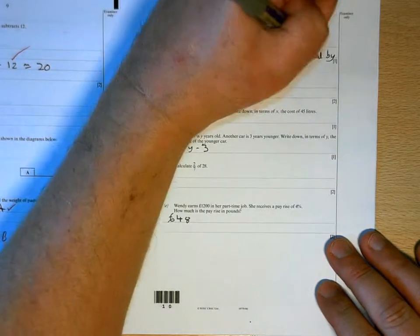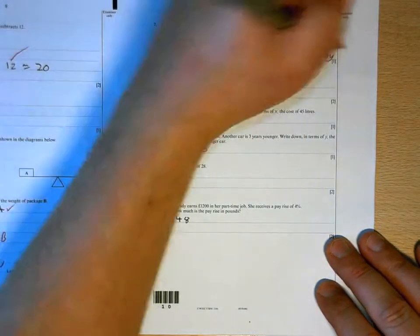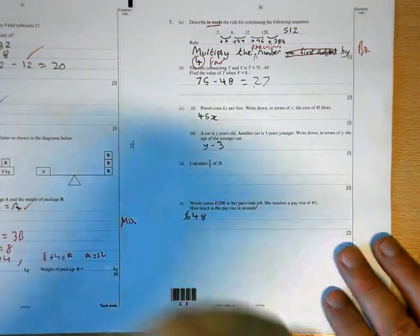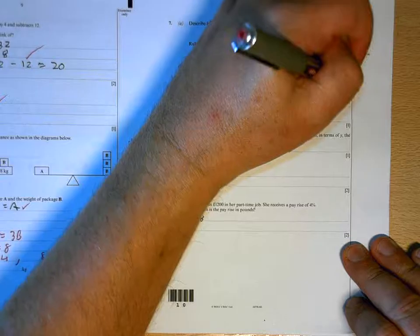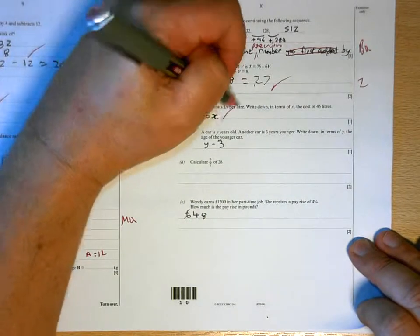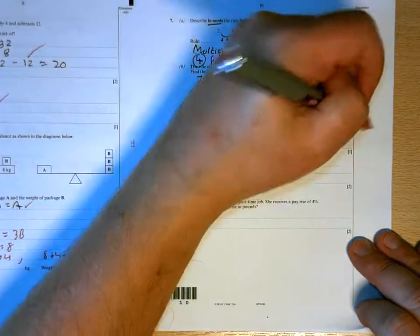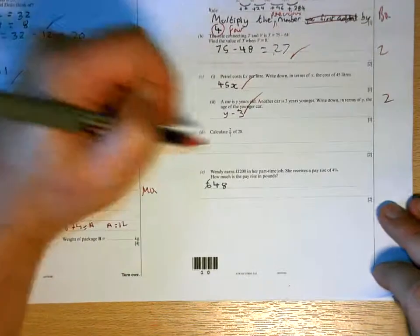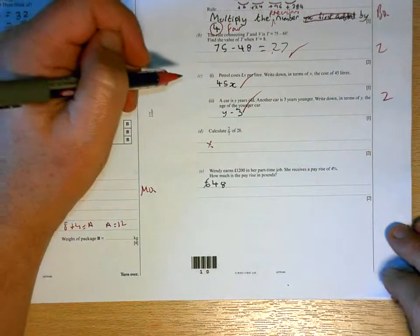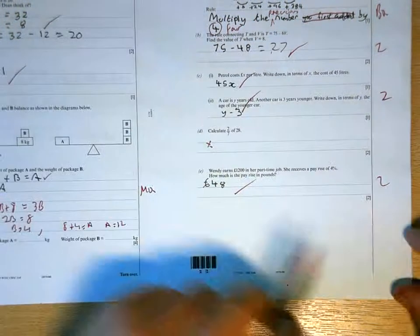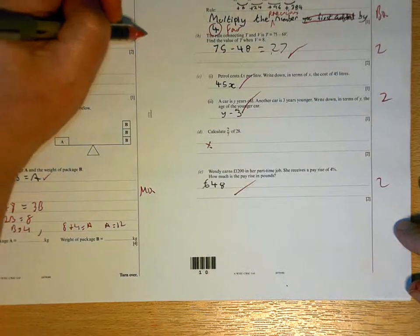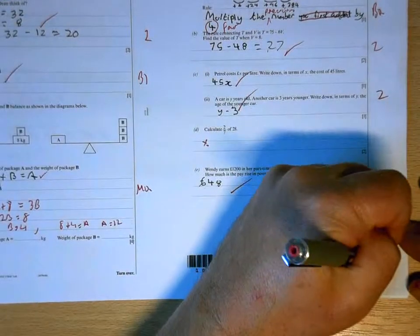So it's just the previous number by, and then the word. So you're not going to get a mark anyway, because you've used a digit. Twenty-seven is correct. Forty-five X is correct. Y take three is correct. Good. Again, we've practiced that since you've handed the paper in. So you should be able to do that now. Six. Nine for the page.